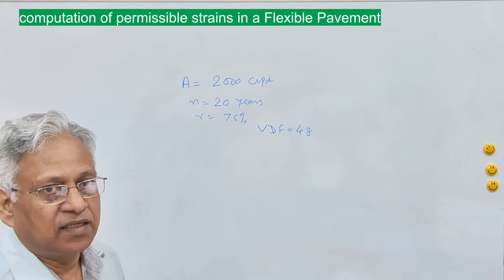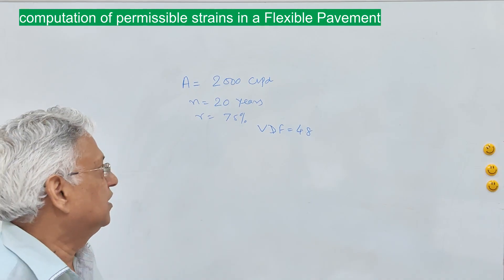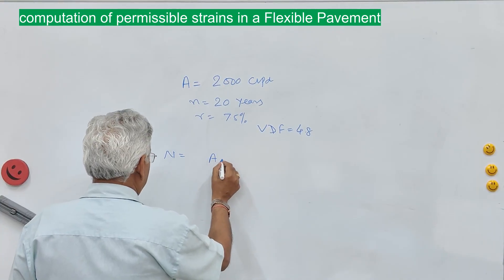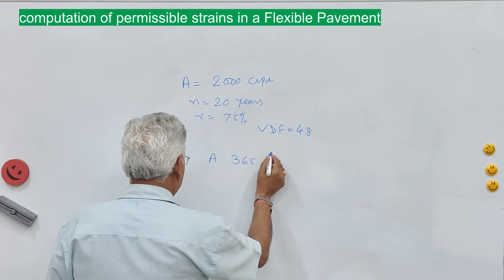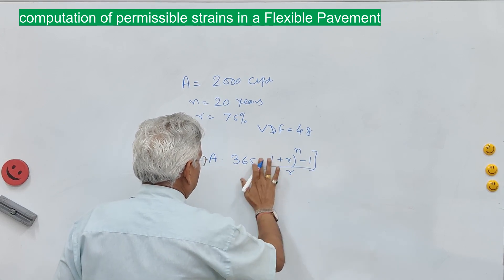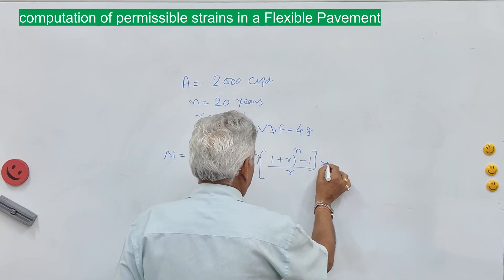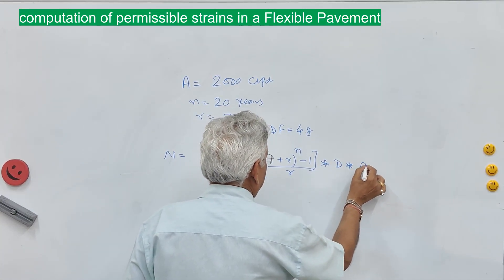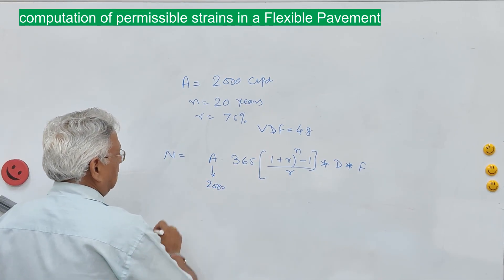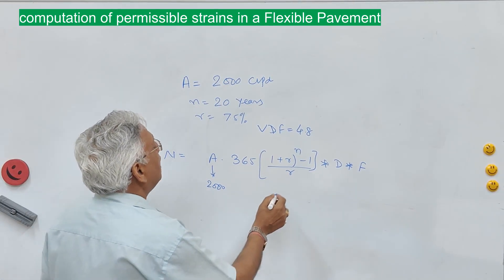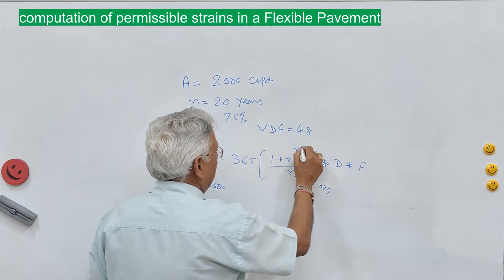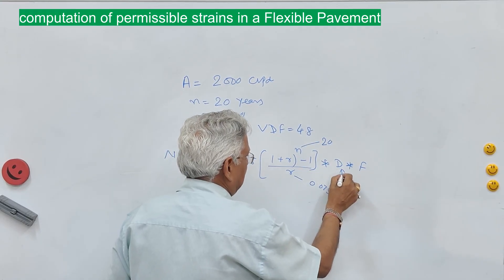With these data you can calculate the MSA — million standard axles — for which you will design your pavement. The cumulative number of standard axles is given by the standard equation: N = 365 × [(1 + r)^n − 1] / r × directional distribution factor × VDF, where A is 2000 commercial vehicles per day.